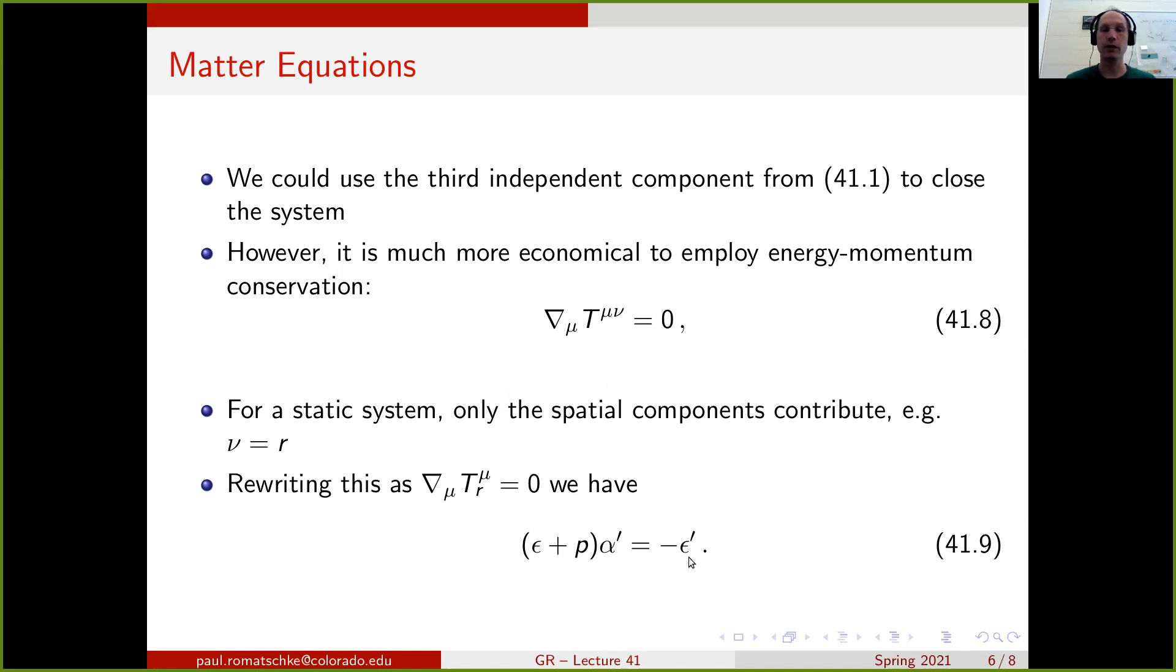this equation has a particularly simple form, and it becomes epsilon plus p times alpha prime equals minus epsilon prime. Again, the prime stands for derivative with respect to the radius. Now, this is a third equation for our variables. We can use it, for instance, to eliminate alpha prime in the equations, which we'll do.